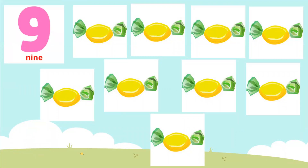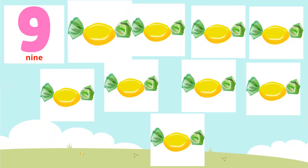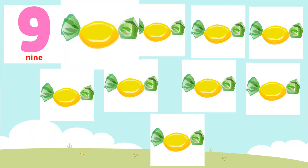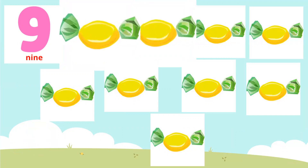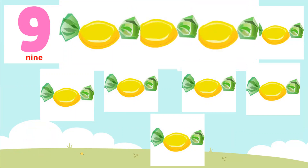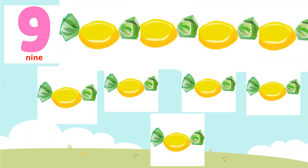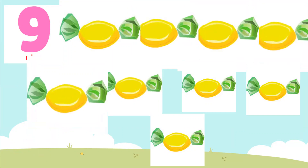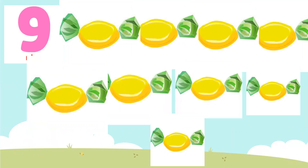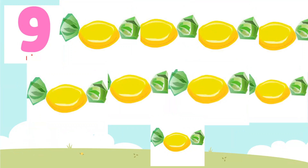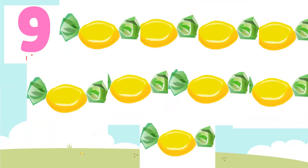Nine. And I and E-9. So many candies are there. Let's count the candy together. One. Two. Three. Four. Five. Six. Seven. Eight. Nine. Nine candies.